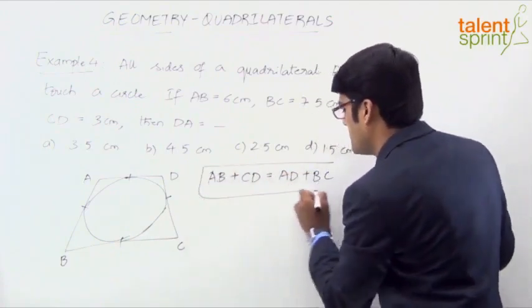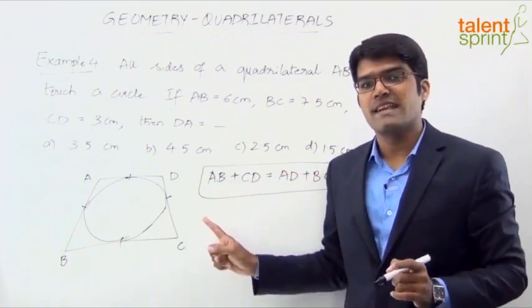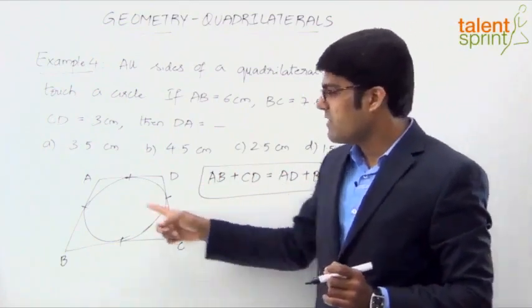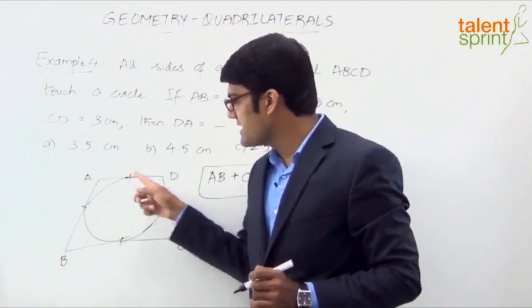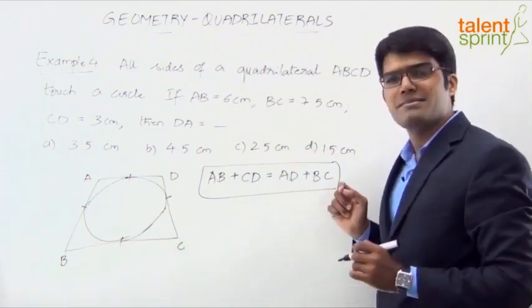Simple point. Just remember this. The sum of opposite sides is equal. So sum of opposite sides, AB plus CD will be equal to the sum of other opposite sides, AD plus BC.